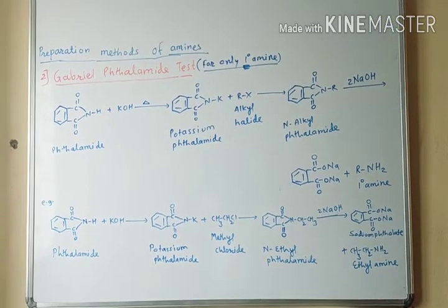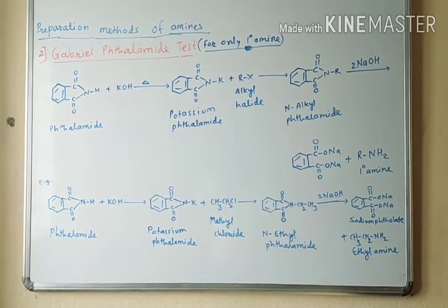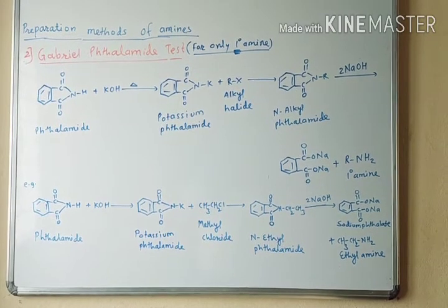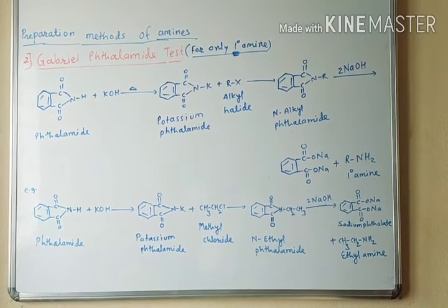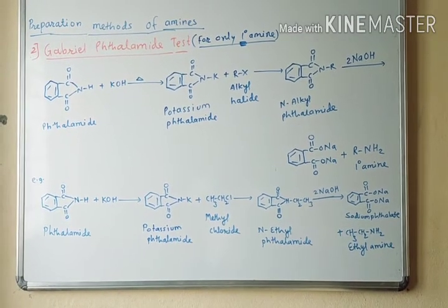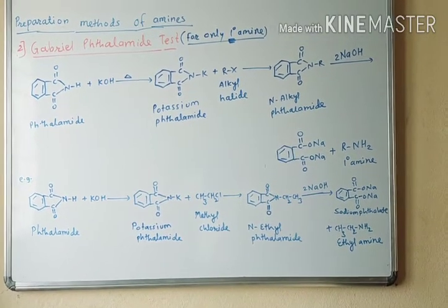Good morning students. Today we are seeing the preparation method of amines, i.e., Gabriel phthalamide test. This test is only for primary amines. Phthalamide is a benzene ring attached to two carbonyl groups, and both carbonyl groups are attached to the amine group, NH.